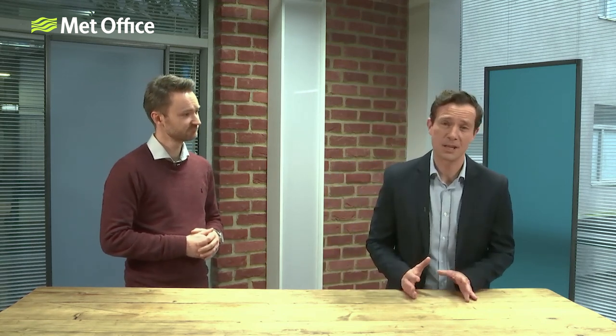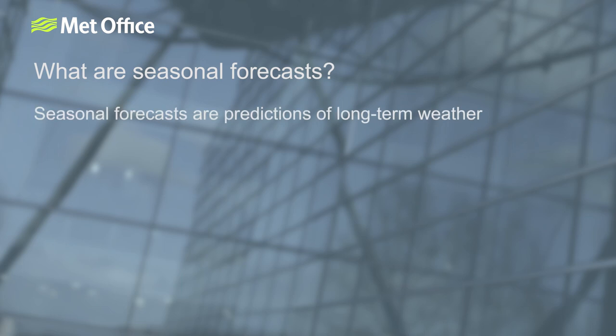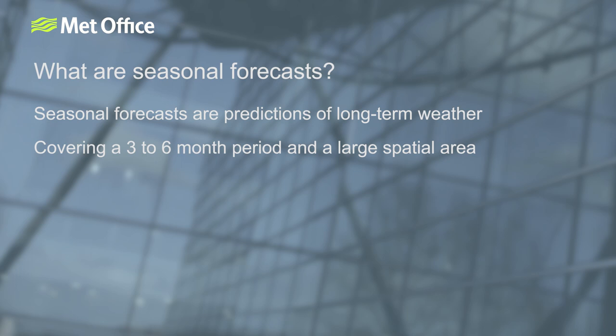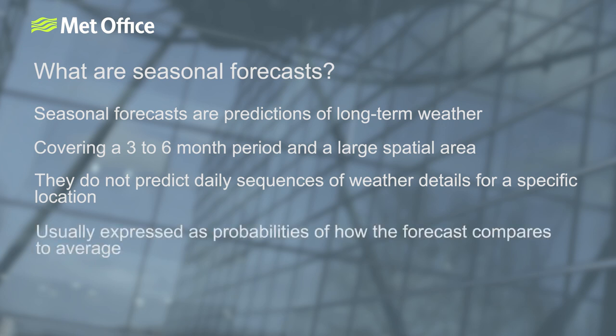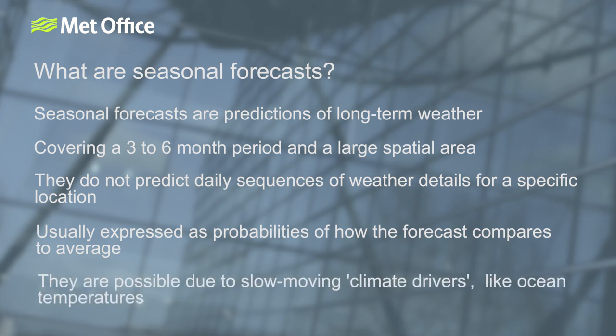Of course the climate system is not as simple as this, and often there are several climate drivers interacting with one another. In our analogy, it's not always clear which way the board will tilt or to what extent, adding uncertainty to the forecast. In summary, seasonal forecasts are predictions of long-term weather, typically for a three to six month period and over a large spatial area. They do not predict day-to-day changes in weather or provide detailed information for a specific location. Forecasts are usually expressed as probabilities of how the forecast conditions compare to average conditions, and the fundamental reason they are possible is thanks to slow-moving climate drivers like ocean temperatures.